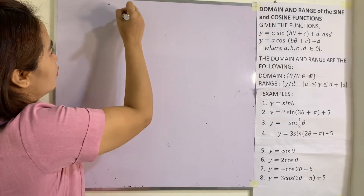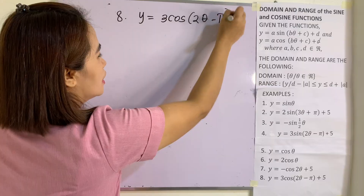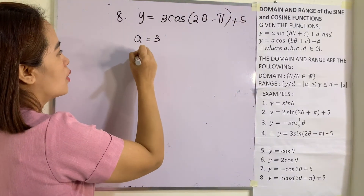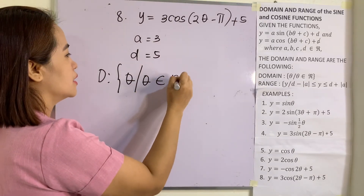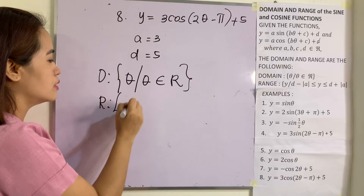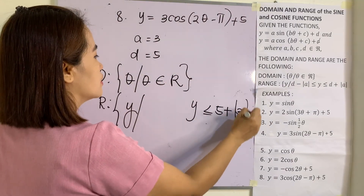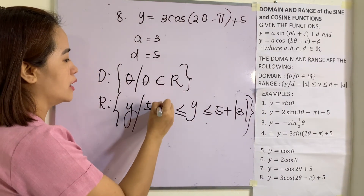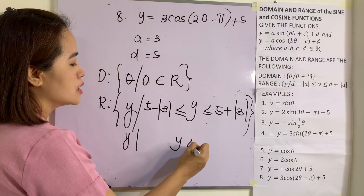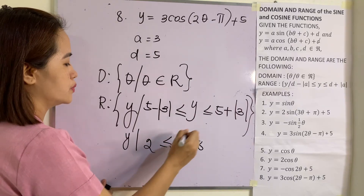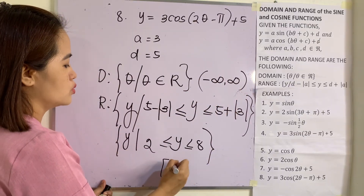Example 8 (last number): y = 3·cos(2θ − 5) + 5. Here a = 3 and d = 5. The domain is the set of all θ in the real numbers. For the range: y ≤ 5 + |3| and y ≥ 5 − |3|. Since |3| = 3, the range is y ≤ 8 but y ≥ 2. In interval notation, domain is (−∞, +∞) and range is [2, 8].